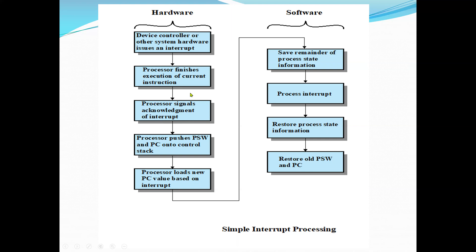The acknowledgement allows the device to remove its interrupt signal. Then the processor saves the PSW and PC onto the control stack. In the software portion, the processor saves the remainder of the process state information, then processes the interrupt, then restores the process state information, and finally restores the old PSW and PC.